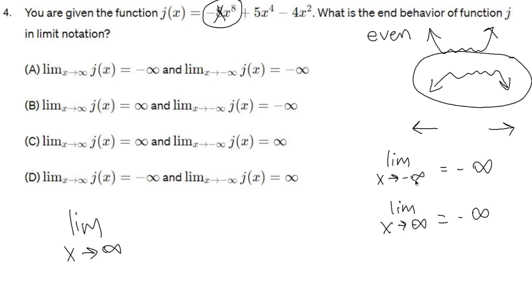So the limit as x approaches negative infinity of j of x, and the limit as x approaches positive infinity of j of x, is also going to be negative infinity. So we need the ones with those negative infinities, and there you are, it's a.